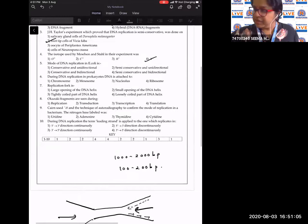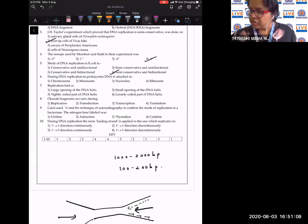So in E. coli it is semi-conservative and bi-directional. So answer to this question is the fourth option.